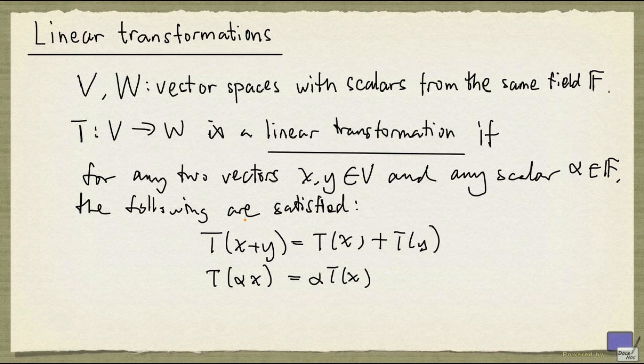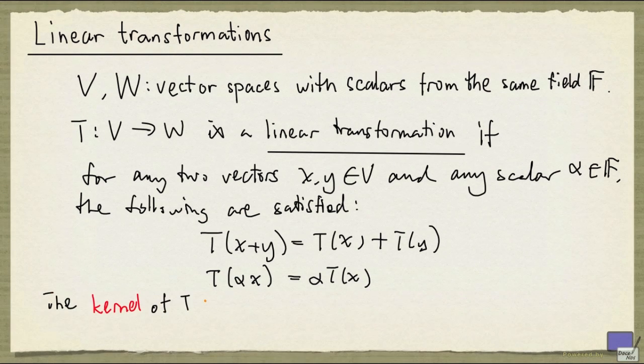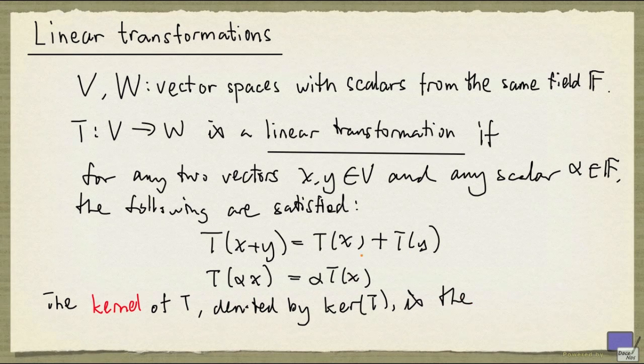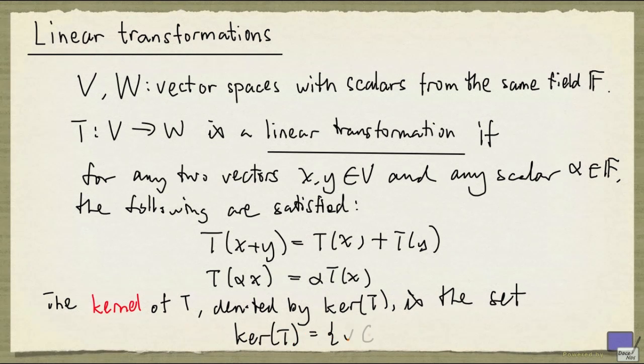Now there's a notion that is very important regarding linear transformation, and it's the kernel of T. So the kernel of T, which is often denoted by ker(T), is the set of vectors that get mapped to the zero vector in W. In other words, ker(T) is the set of vectors in V such that T(v) is equal to the zero vector in W.